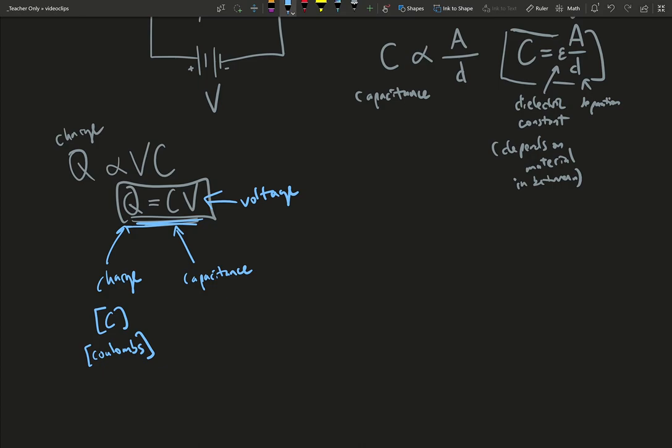So C, the capital C, if you see it as a unit symbol, represents Coulombs, and it means you're talking about a quantity of charge. And if you're putting the variable in an equation, it means you're going to use the capital Q.